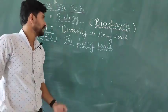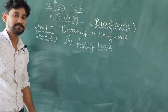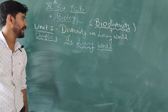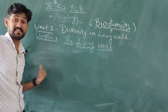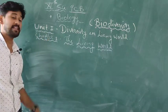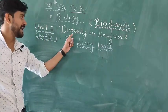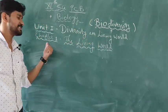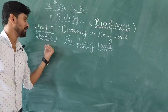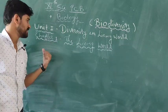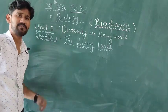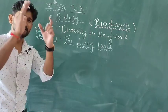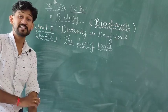Hello everyone, I am Abhishek and I will teach you biology. We will discuss the NCERT syllabus, starting with Unit 1 known as diversity in the living world. This unit basically consists of 4 chapters: Chapter 1 - The Living World, Chapter 2 - Biological Classification, Chapter 3 - Kingdom Plantae, and Chapter 4 - Kingdom Animalia. We will discuss all these step by step.